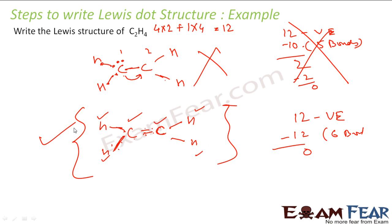The double-bond structure is the correct structure, not the single-bond one. Because in the single-bond structure we were not able to make everybody happy. Carbon 1 shared one pair of electrons with carbon 2, and with that we attained a situation where everybody is happy.